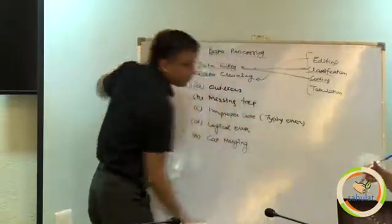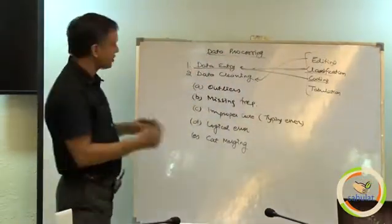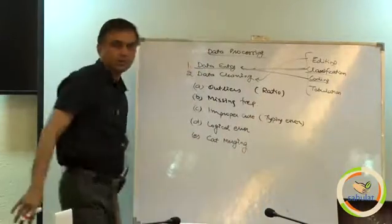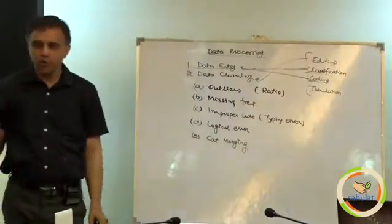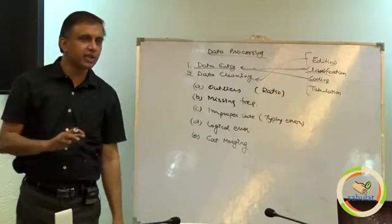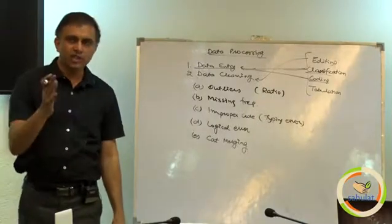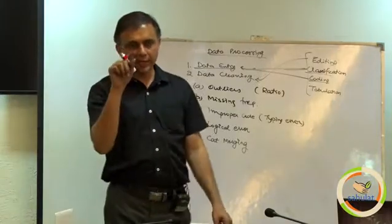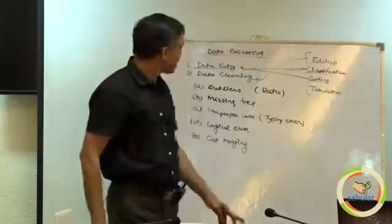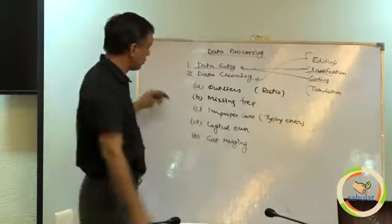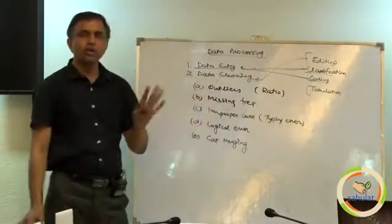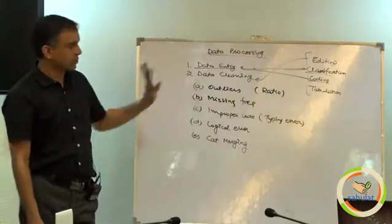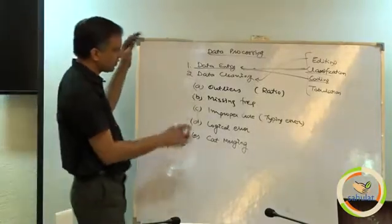So first is outlier, a number which is very much away from rest, please note outliers are possible only in ratio data. Outliers are not possible, is it possible in MCQ? Outlier is a number very significant away from other. So there is a possible while entering the code 1, 2, 3, you wrote 33, that is why I am calling as improper code. Outlier is only in the ratio data. So people of finance, economics, they must check the outlier first, otherwise entire is wastage.